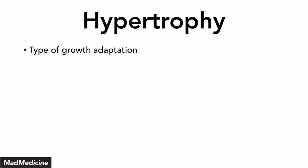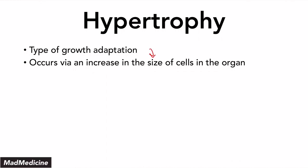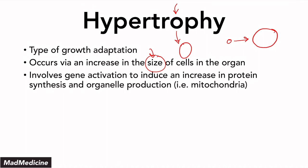Hypertrophy is a type of growth adaptation that occurs due to an increase in the size of a cell in the organ. Hypertrophy has to do with the size. I always use the O in the word hypertrophy as a memory tool — think of that O expanding to a larger O. So essentially, hypertrophy is when a cell grows from a normal-sized cell to a bigger cell. When a cell is growing during hypertrophy, genes are activated that induce an increase in protein synthesis as well as organelle production — you need more protein and more energy from the mitochondria, so you produce and synthesize more organelles.